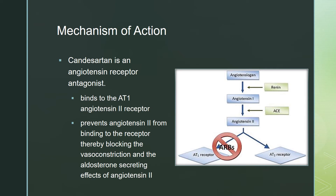Candesartan is a receptor antagonist that blocks type 1 angiotensin 2, or AT1, receptors on blood vessels and other tissues such as the heart. These receptors are coupled to the signal transduction pathway that stimulates vascular smooth muscle contraction. As a result, Candesartan promotes renal excretion of sodium and water by blocking the effects of angiotensin 2 in the kidney and by blocking angiotensin 2 stimulation of aldosterone secretion. It also dilates arteries and veins and thereby reduces arterial pressure and preload and afterload on the heart.